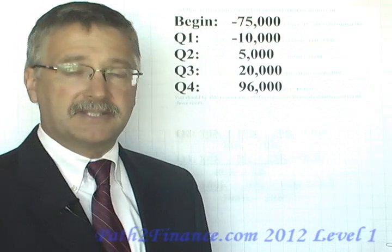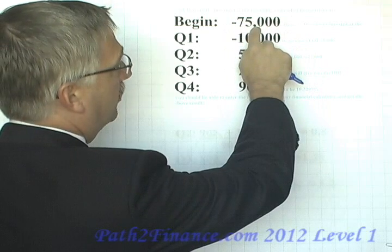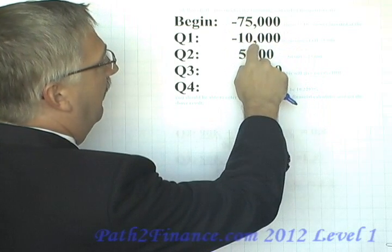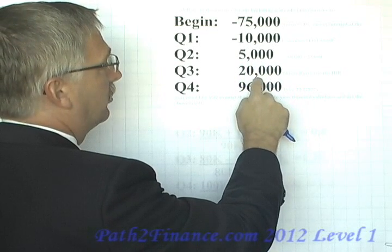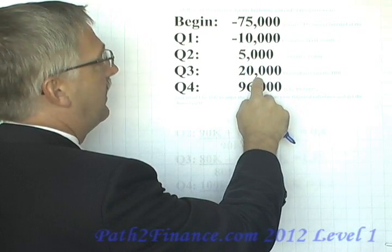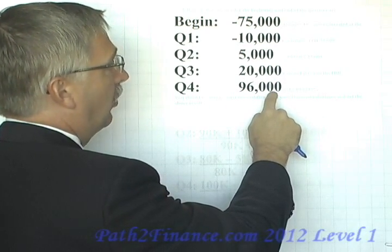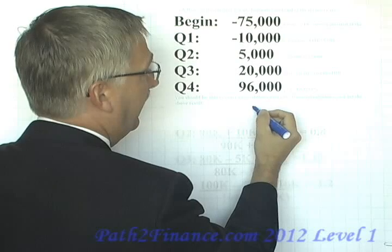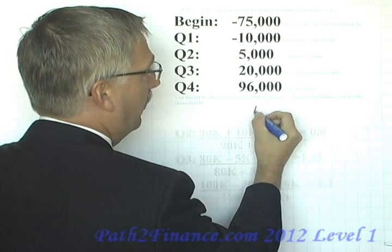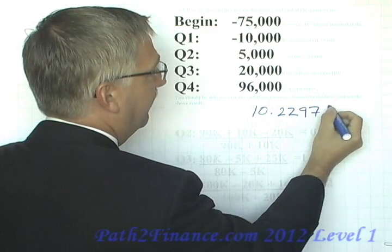This slide summarizes our investor's cash flows: he began with $50,000, added $25,000, added $10,000 in quarter one, withdrew $5,000 in quarter two, withdrew $20,000 in quarter three, and withdrew the final $96,000 balance in quarter four. If you input these cash flows into your financial calculator, you'd end up with an internal rate of return of 10.2297%.